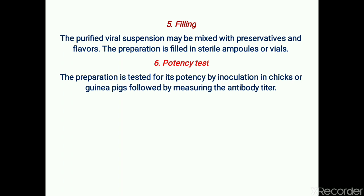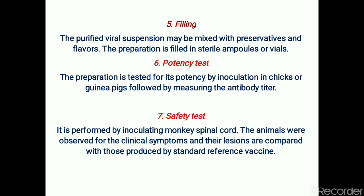The sixth step is the potency test. The preparation is tested for its potency — that is, its potential for immunogenicity. This is done by inoculation in chicks or guinea pigs, followed by measuring the development of antibodies by measuring the antibody titer.